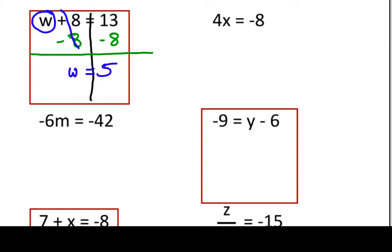When I'm done, I always want to go back and do a check. Did I do this problem correctly? And the way that I do it is I go back to the original problem, the original equation. But instead of the variable, I put in my answer. I plug in 5 in place of w. Well, 5 + 8 really is 13. That's what I wanted. So I know I'm good.